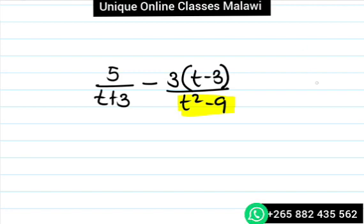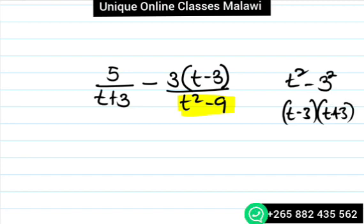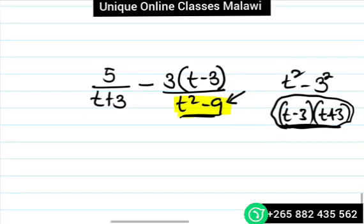It's a difference of two squares. 9 can be written as 3 square. T square, you can separate the squares. T minus 3 times t plus 3. So you can watch my previous videos when I was doing difference of two squares.